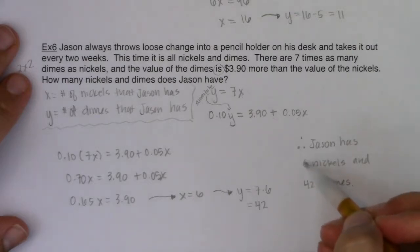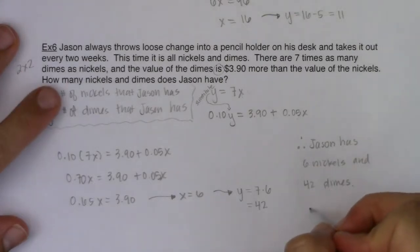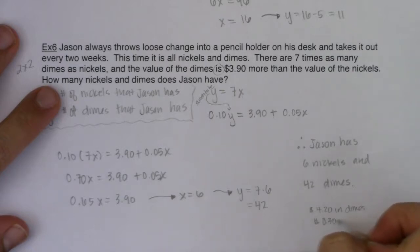And with the nickels, he has about 30 cents. So he's got $4.20 in dimes, and he's got about 30 cents in nickels. I'm getting that because if you have 42 dimes, you do have $4.20. If you have 6 nickels, well, 6 times 5 is 30 cents.